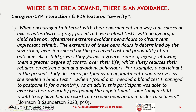A recent article published in the PDA and Education Special Issue talks about transactional stress models for PDA: 'When encouraged to interact with their environment in a way that causes or exacerbates stress — such as being forced to have a blood test with no agency — a child relies on often extreme avoidance behaviours to circumvent unpleasant stimuli. The extremity of these behaviours is determined by the severity of aversion caused by perceived cost and probability of an outcome. As a child grows, they garner a greater sense of agency, allowing a greater degree of control over their life, which likely reduces their reliance on extreme avoidance behaviours.' For example, a participant describes postponing an appointment upon discovering she needed a blood test — as an adult, she was able to exercise her agency by postponing it, something a child would likely have to resort to extreme behaviours to achieve.